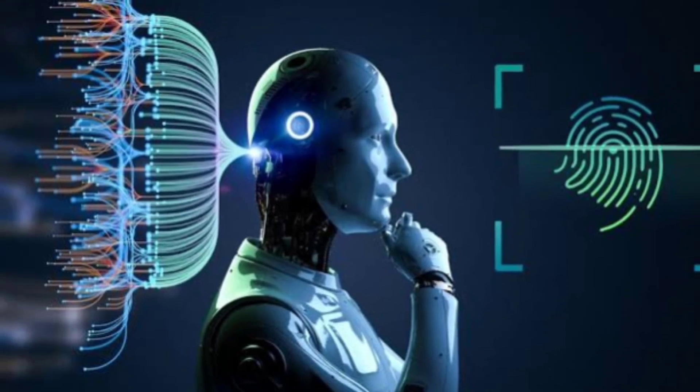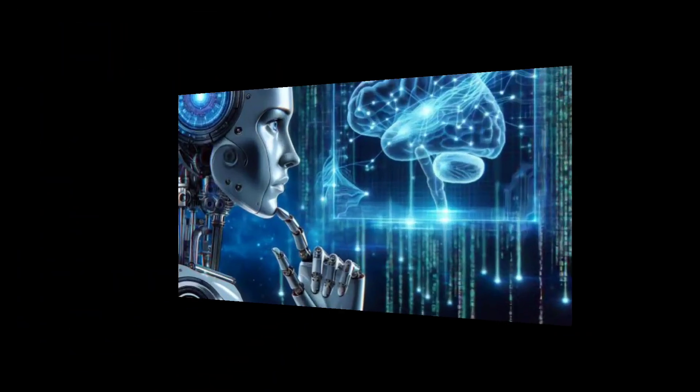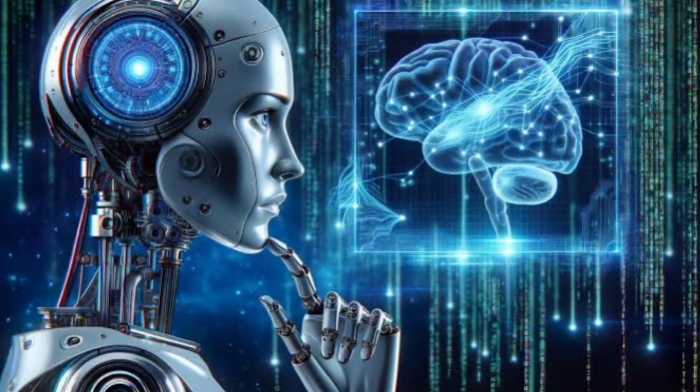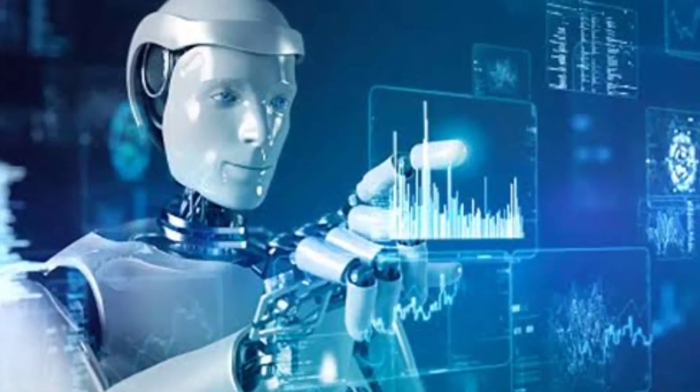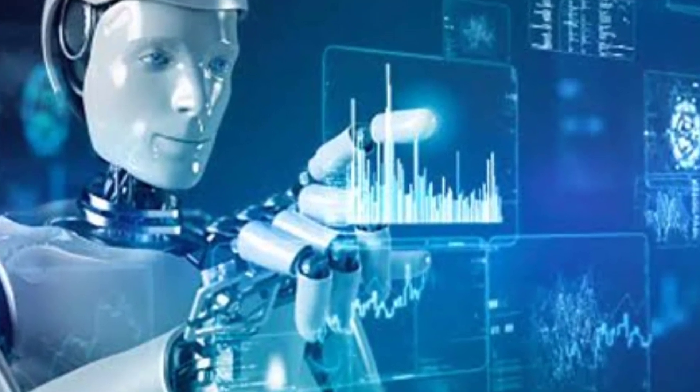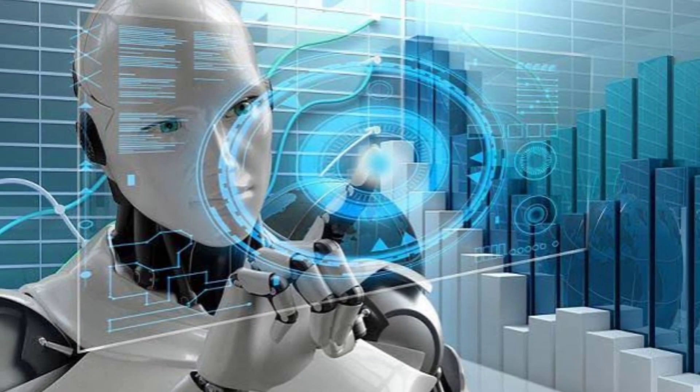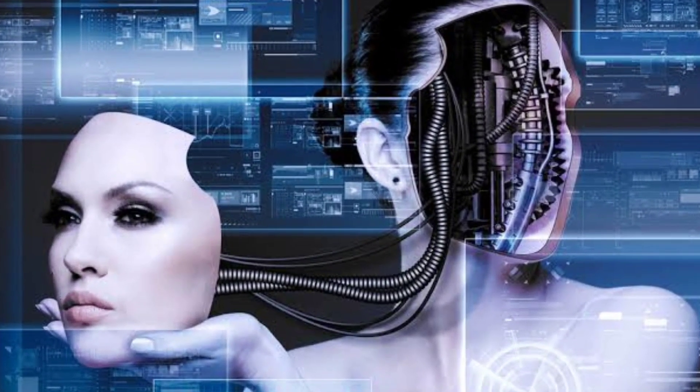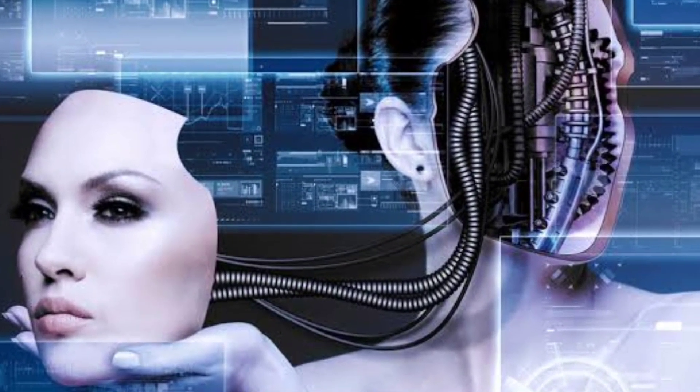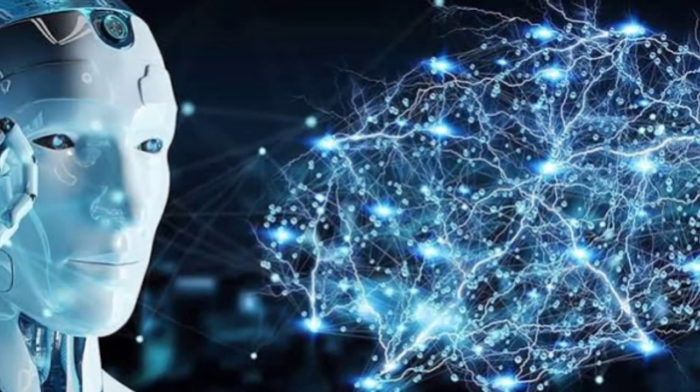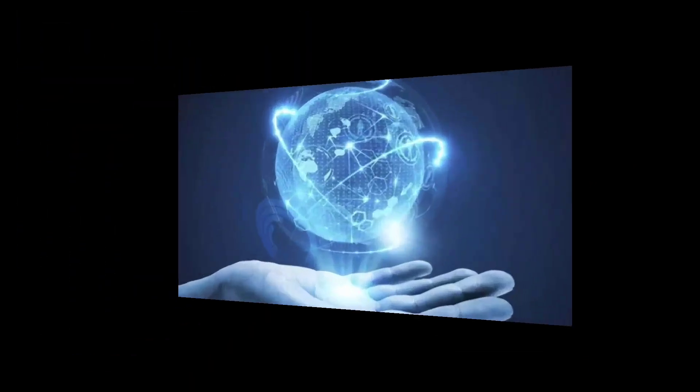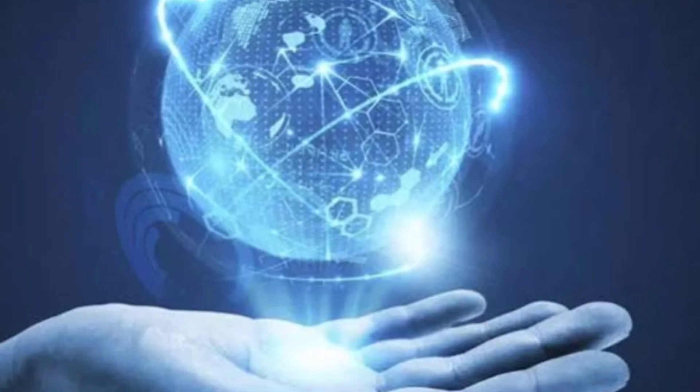In manufacturing, robotics and automation are driving the concept of smart factories, where machines, robots, and systems are interconnected and communicate with each other to optimize production processes. Advanced robotics, combined with AI and the Internet of Things IOT enable real-time monitoring, predictive maintenance, and adaptive manufacturing. This results in higher efficiency, reduced downtime, and lower production costs.